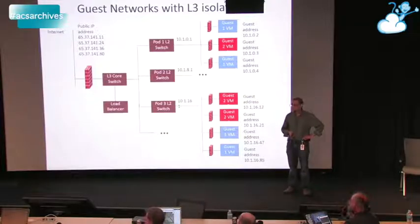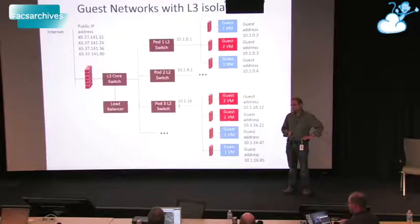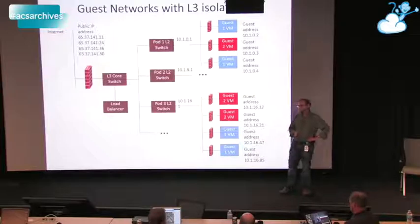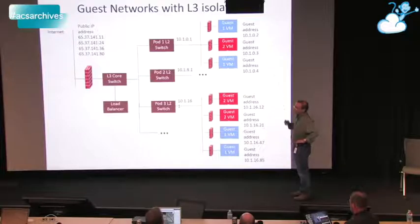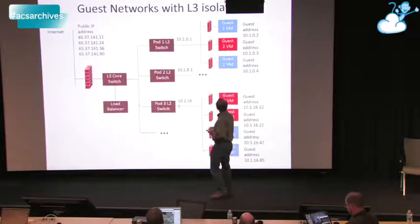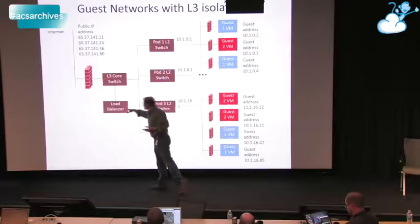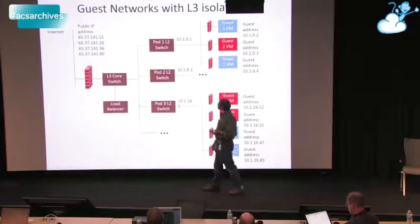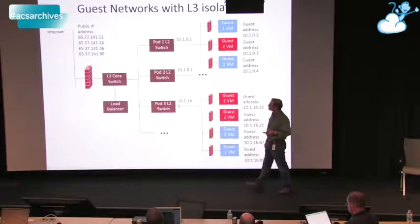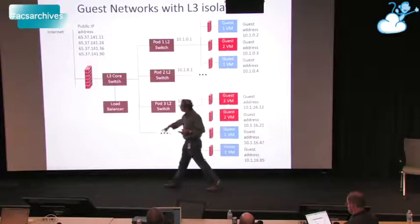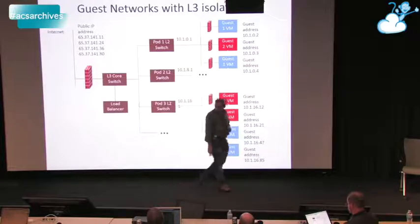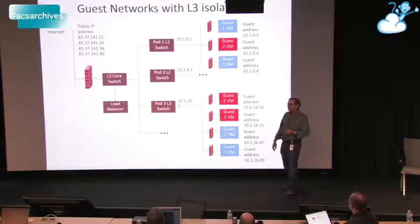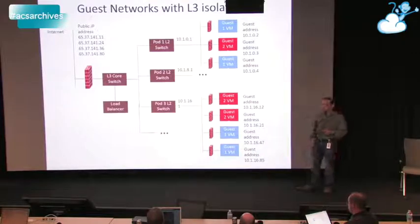On this diagram, someone asked whether there should be a virtual router between the pod switch and the guest VM. No — this is the L3 isolation mode, which is what Amazon kind of works with. In this case the load balancer is attached to the L3 core switch and can provide load balancing services. It also typically provides you a static MAC as well.